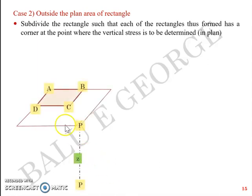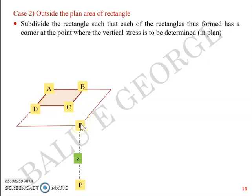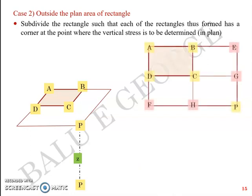Now there is a second case: point P is outside the plan of the rectangle. The same principle applies — subdivision. You have a loaded rectangle ABCD, but point P is not within it; it's somewhere outside the plan area. Think of ABCD as a building footprint and P as a point outside it. In this case, you draw a bigger rectangle — say AEPF — such that this bigger rectangle has point P at the corner.